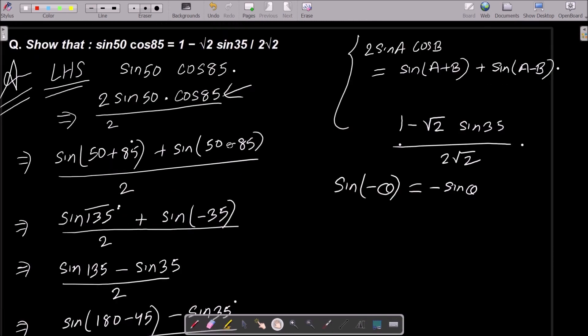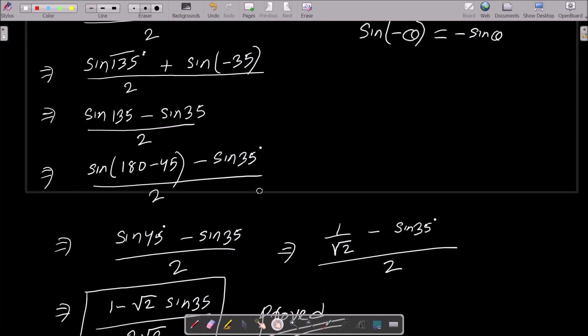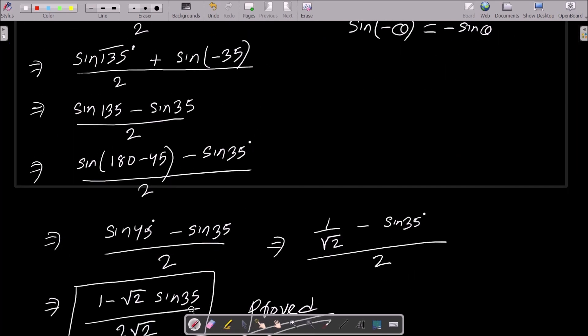There after, the next is here we need to get 35 only on the right side. So this sin 135 we can write sin 180 minus 45. So if you subtract this one, this is equal to 135.